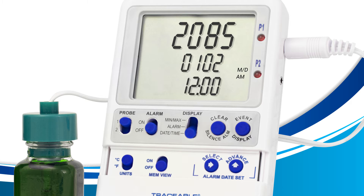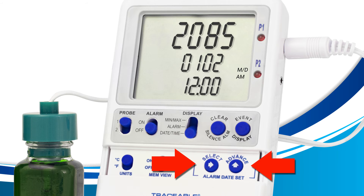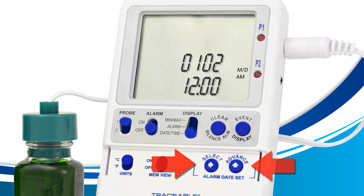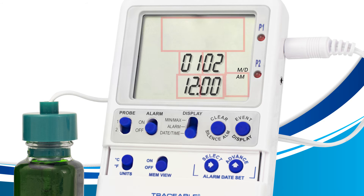Now let's learn what the advance button does. The advance button allows you to modify the year, date, and time on your screen, but it will only change the value of a field that has been selected by the select button — the area that is flashing is what's currently selected. Since no fields are currently flashing, pressing the advance button does nothing. But if we press the select button first to select the year, pressing the advance button will change that value. This same action works on any other selected field.